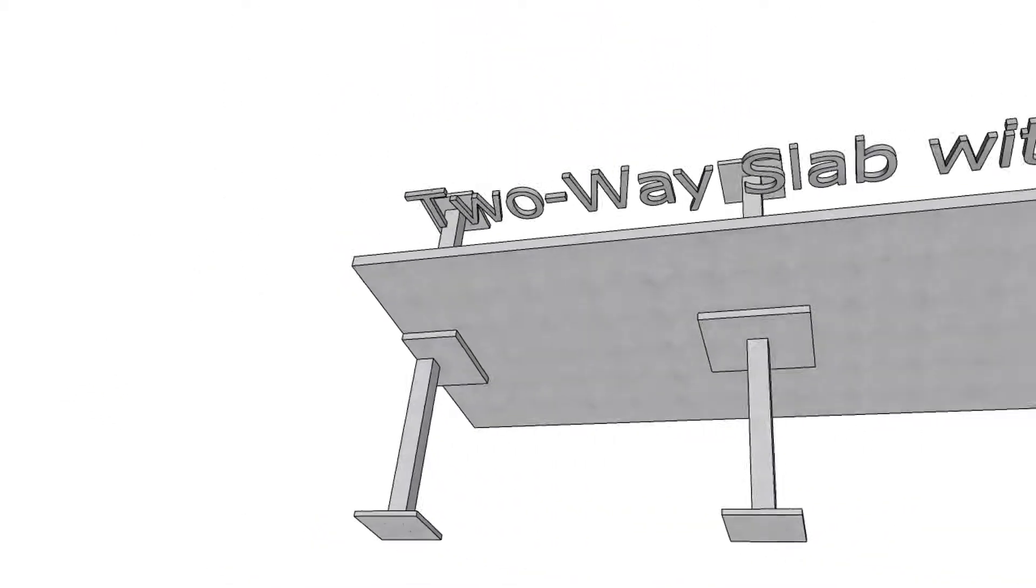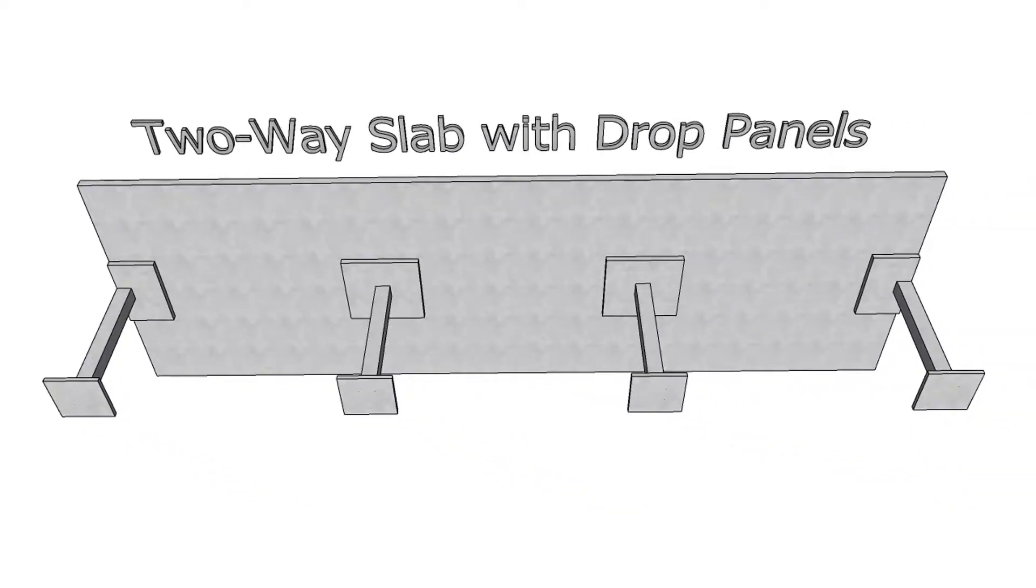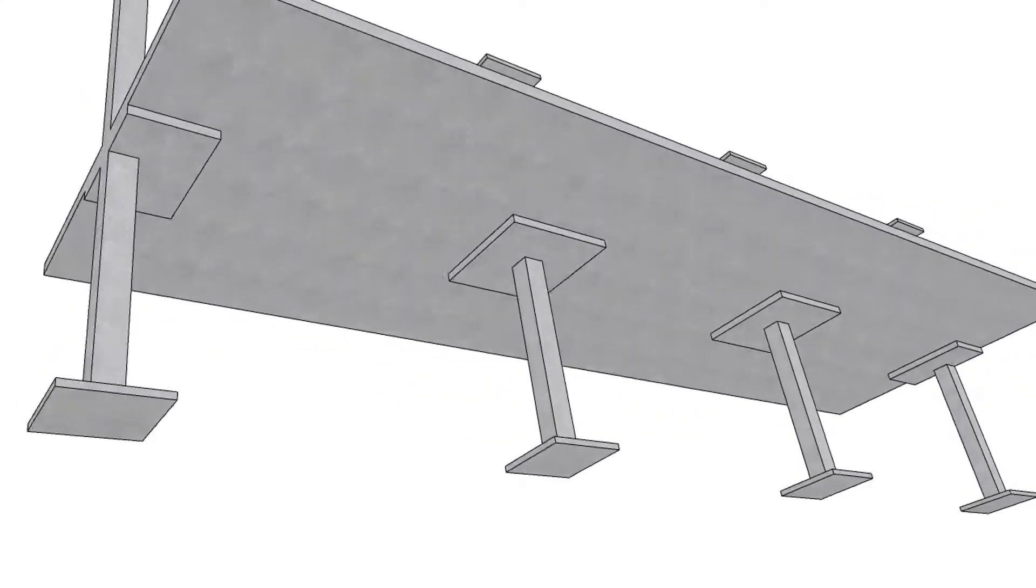Flat slab systems or two-way slab with drop panels are similar to flat plate floor systems with the exception that the flat slab has thickened portions around the supports, called drop panels.